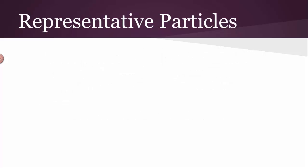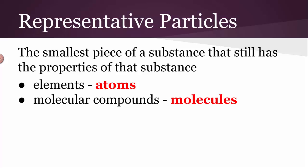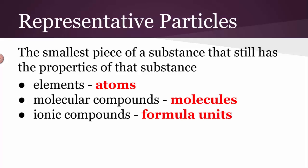Before we do our example, we want to understand what we mean by particles. We're talking about particles of a substance. It's the smallest piece of a substance that still has the properties of that substance. Depending on what kind of substance you have, you're going to have a different particle name. For example, if you have an element, the smallest piece of an element that still has the properties of that element is called an atom. The representative particle of an element is an atom. If you have a molecular compound, the smallest piece of that that still retains its properties is called a molecule. If you have an ionic compound, we call the smallest piece of an ionic compound that still has its properties a formula unit. Those are the particles that we'll be using. We won't actually be calling them particles. We'll be calling them either atoms, molecules, or formula units, depending on what type of substance we're dealing with.